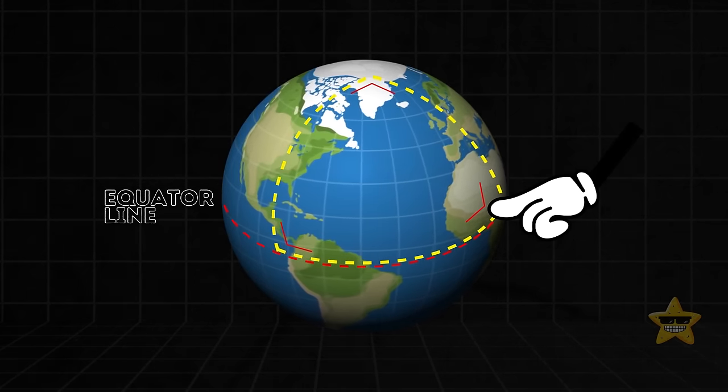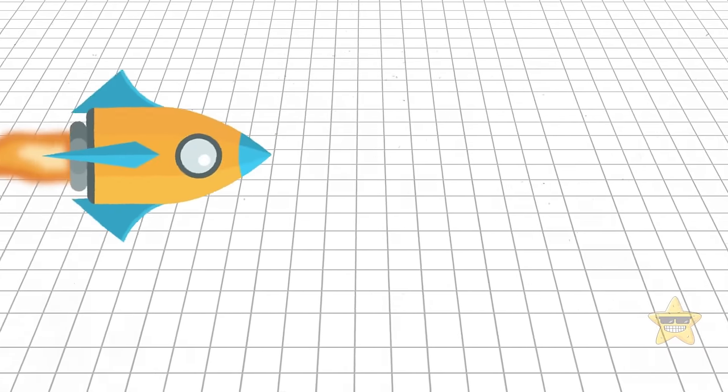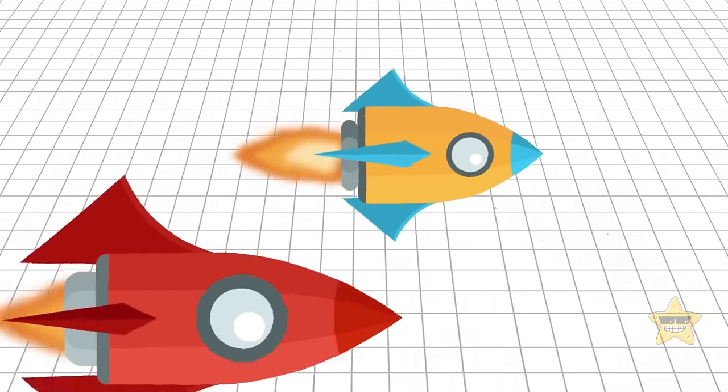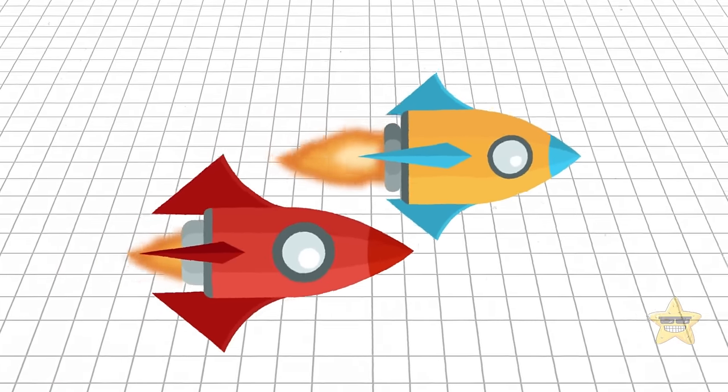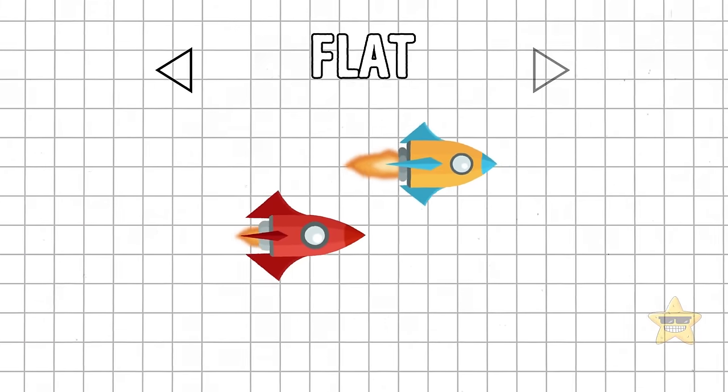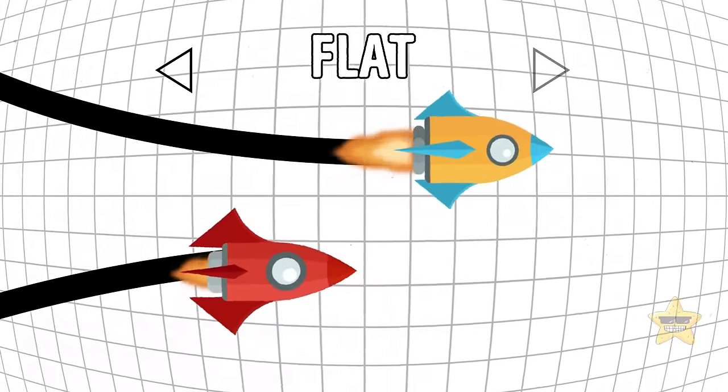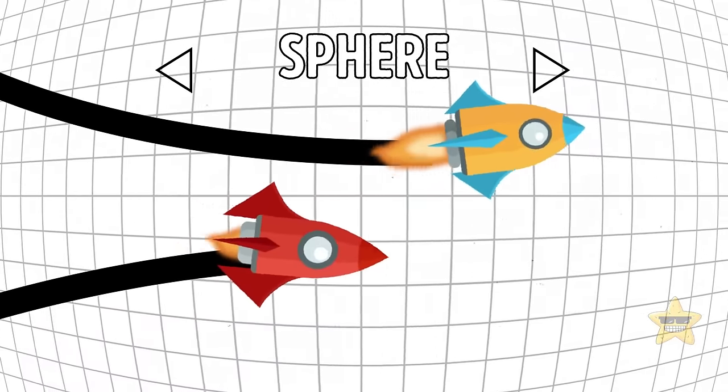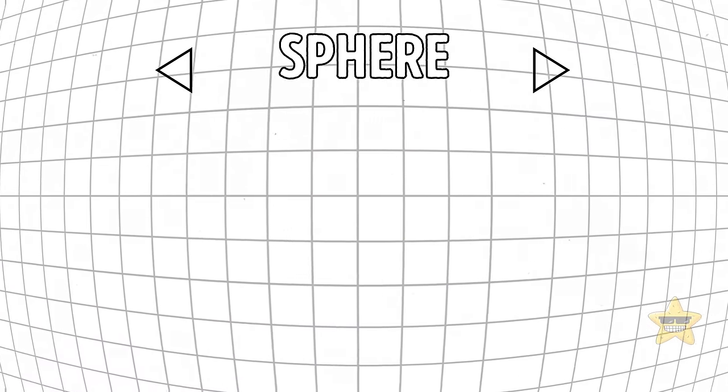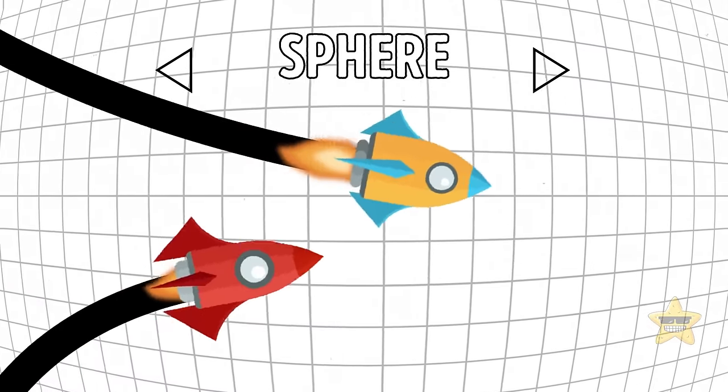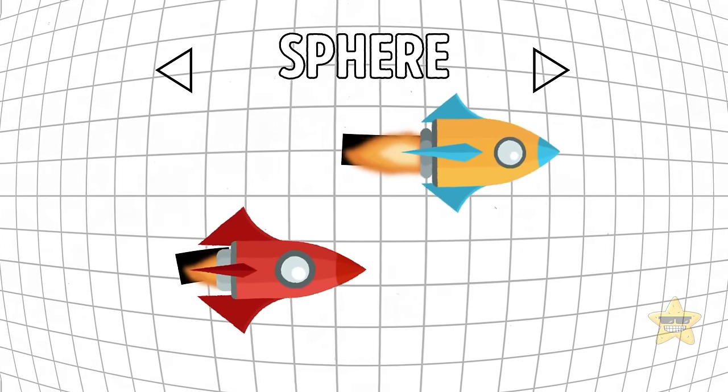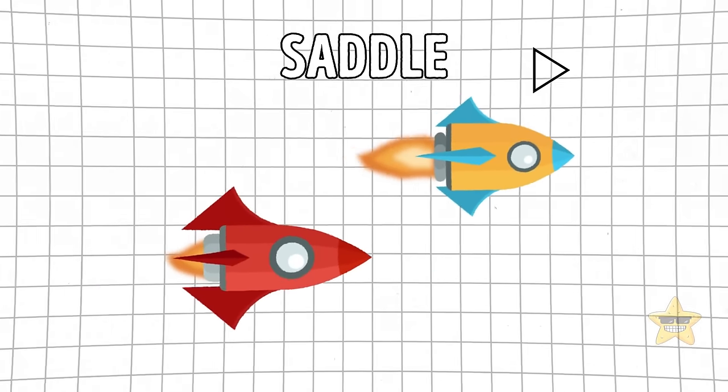Still struggling to understand? Here's another way to picture it. In a flat universe, two rockets traveling side by side will always remain parallel. This is in contrast to a closed universe, where the rockets will travel along the curve of space and eventually meet where they started. In an open universe with negative curvature, the rockets will gradually drift apart and never cross paths again.